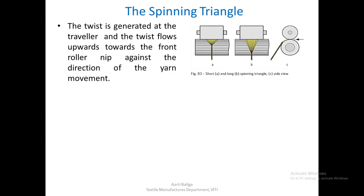The twist is generated at the traveller and the twist flows upwards towards the front roller nip, against the direction of the yarn movement. Once the traveller rotates with one rotation, one twist is inserted and as you keep on twisting the yarn, it will start flowing towards the front roller nip. The yarn is moving downwards whereas the twist flow is upwards.